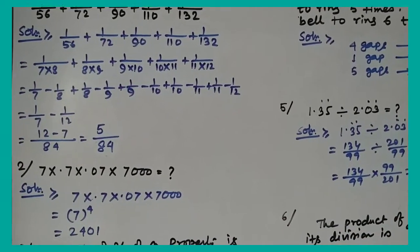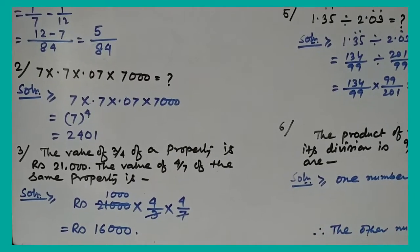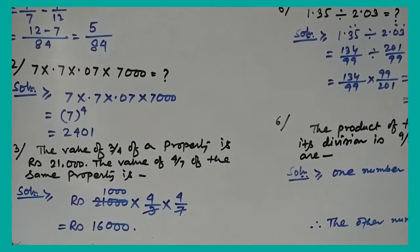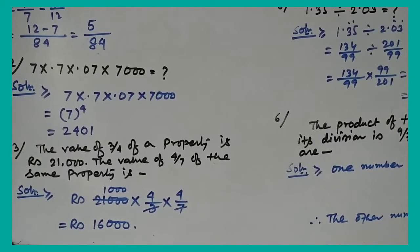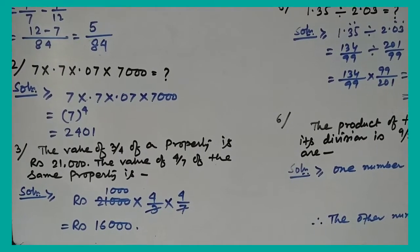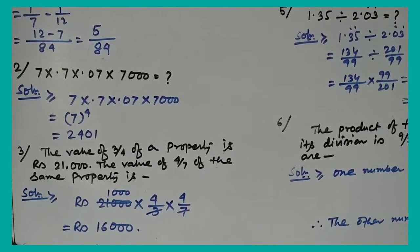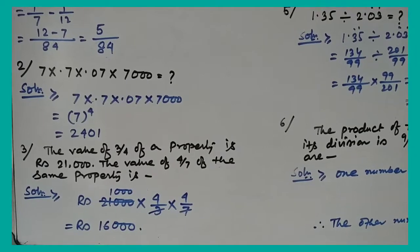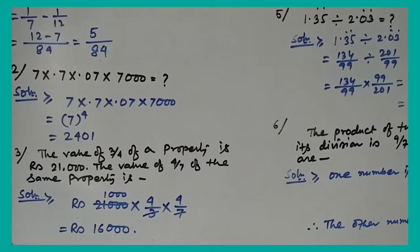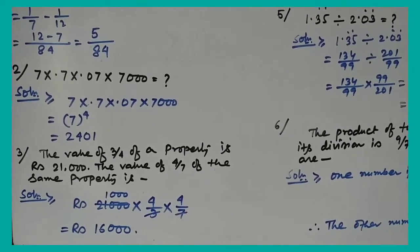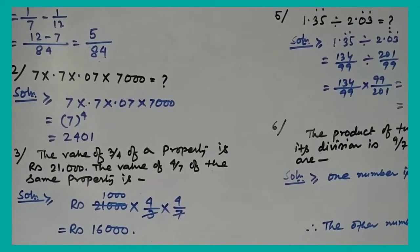Question number 3: The value of 3/4 of a property is Rs. 21,000. Find the value of 4/7 of the same property. Total property = 21,000 × 4/3. Then 4/7 of the total = 21,000 × (4/3) × (4/7) = 16,000.